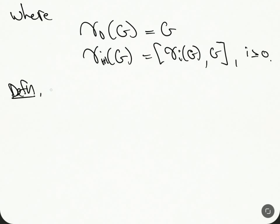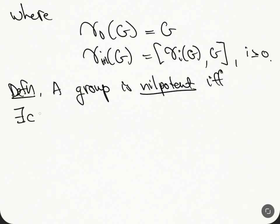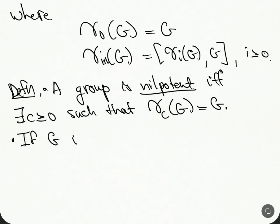Definition: A group is nilpotent if and only if there exists some c greater than or equal to zero such that γ_c(G) is trivial. If G is nilpotent, then the minimum of the set of c such that γ_c(G) is one, that is trivial,